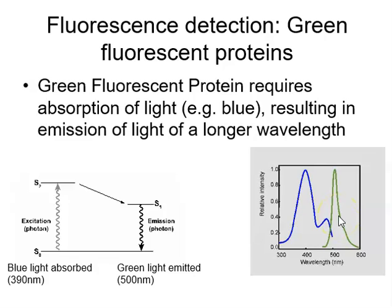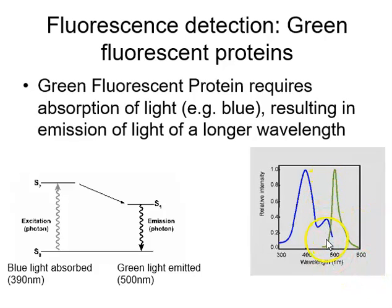Fluorescence systems have an inherent problem: exciting the sample with blue light can overlap with the emission spectrum. There is normally a cut-off filter, but this can reduce sensitivity and allow some bleed-through. Additionally, the sample itself can auto-fluoresce — emitting green light even in the absence of true fluorescence — contributing to a poor signal-to-noise ratio. A large Stokes shift is beneficial in many situations to prevent interaction between the excitation source and emission detection. The shift from excitation to emission wavelength is what we call the Stokes shift.